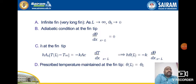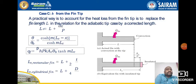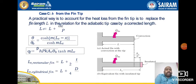For the long fin: at L → ∞, θ(L) → 0. For the adiabatic condition: dθ/dX = 0 at X = L. For the case of convection at the fin tip, the corrected characteristic length is LC = L + Ac/P. The temperature distribution becomes: θ/θB = cosh[m(LC − X)] / cosh(m·LC). The rate of heat transfer through the fin becomes: Qf = √(HPKA)·θB·tanh(m·LC), where for a rectangular fin LC = L + T/2, and for a cylindrical fin LC = L + D/4.